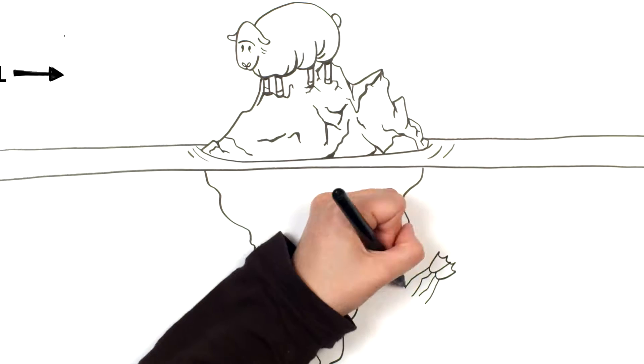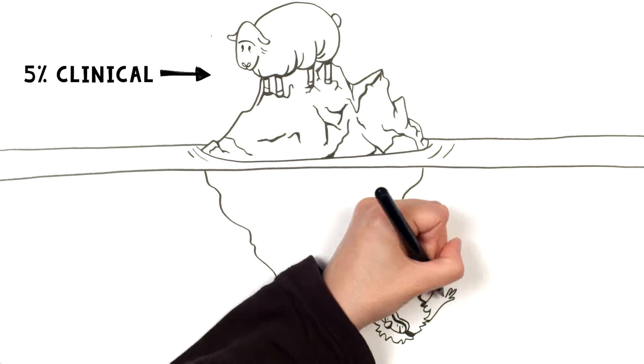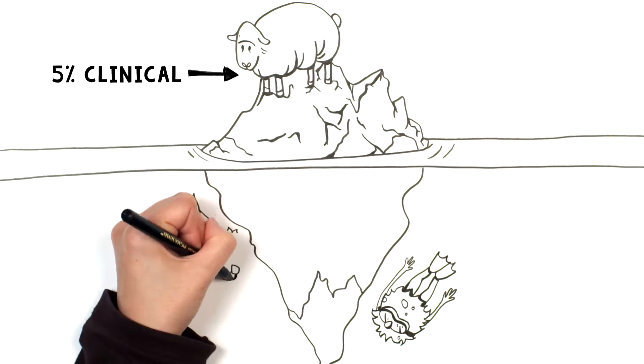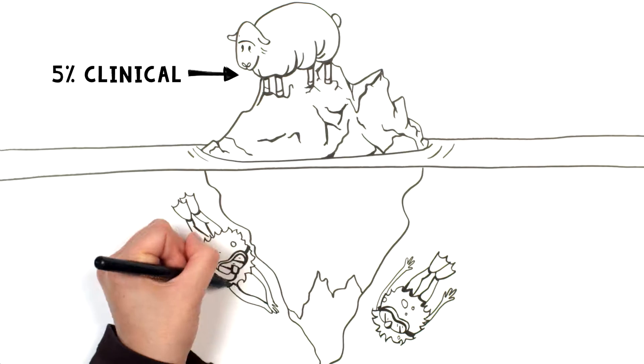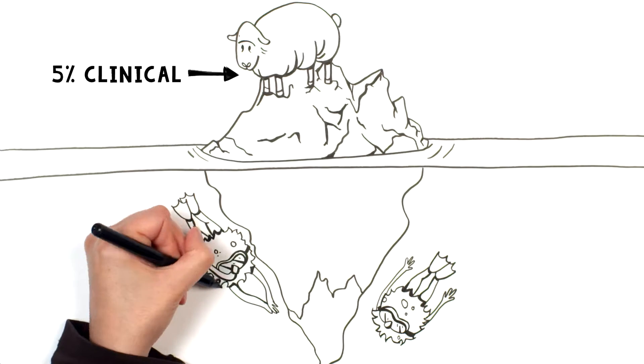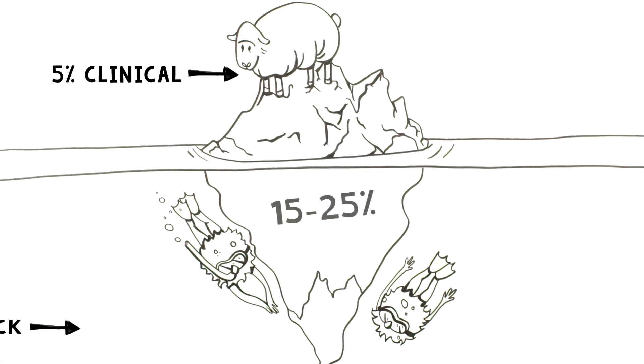In fact, I learned that less than 5% of infected sheep show sickness at any time. The rest are infected, but you can't tell. So one sick sheep means I might have another 15 to 25 infected sheep in the flock.